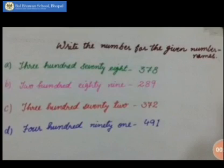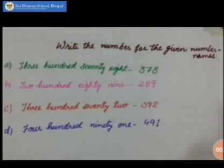Till today you were writing number names, and now we are going to write the numbers for the given number names. Read the instruction with me: 'Write the number for the given number names.' Now the first one is 378 — this is the number name and you have to write the numeral for it.